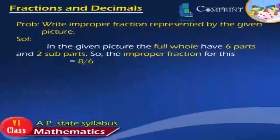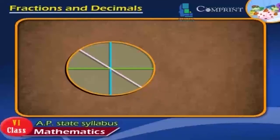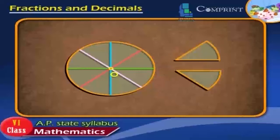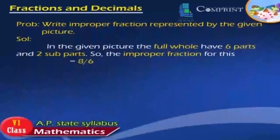Problem: Write the improper fraction represented by the given picture. Solution: In the given picture, the full whole has 6 parts and 2 sub-parts. So the improper fraction for this is equal to 8 by 6.